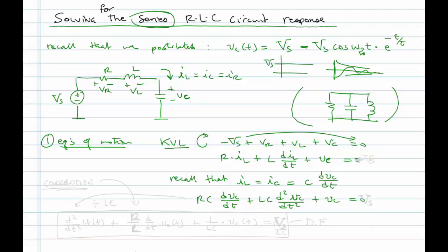Let me rearrange this. I'll go from highest term to lowest term and divide by LC. So we'll have the second derivative of the capacitor voltage plus R over L times the derivative of the capacitor voltage plus one over LC times Vc. Wait a minute, I'm sorry. I forgot I have Vs. That is not my homogeneous equation. This is our differential equation that describes the system. And I need to put Vs over LC on the right side if I'm going to divide through.